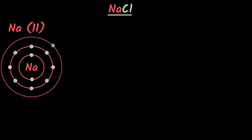So as sodium, we want to get rid of that one electron so that we get our octet. But what about chlorine? Chlorine has 17 electrons. I want you to pause the video at this point and see if you can write that down yourself.